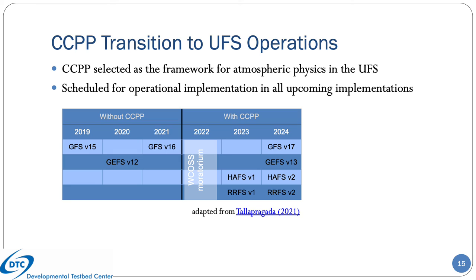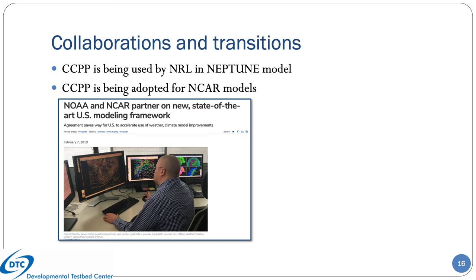The CCPP is on track for transition to operations in all upcoming implementations of the UFS. There will be a moratorium on implementations in 2022. After that, CCPP will be included in the 2023 implementations of HAPS v1, the Hurricane Analysis and Forecast System, and RRFS v1. In 2024, CCPP will be part of GFS v17, GAPS v13, HAPS v2, and RRFS v2. In addition, CCPP is being used by NRL in its Neptune model and is being adopted for use in NCAR models under a Memorandum of Agreement signed by NOAA and NCAR in 2019.